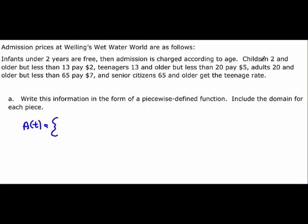But then the next one says children two and older. So this is up to but not including. So it's zero dollars for anything between zero and two but not including two. Children two and older but less than 13 pay $2. So then we've got a two, and that's from two including up to 13. Teenagers 13 and older but less than 20 pay $5. So we've got a five here, and that would be including 13 up to 20, not including.